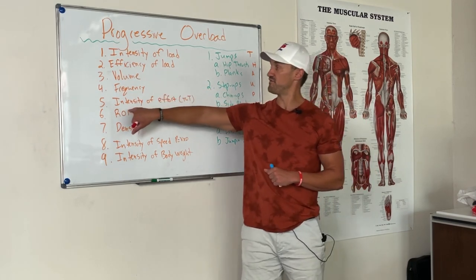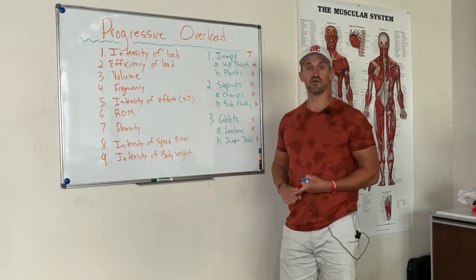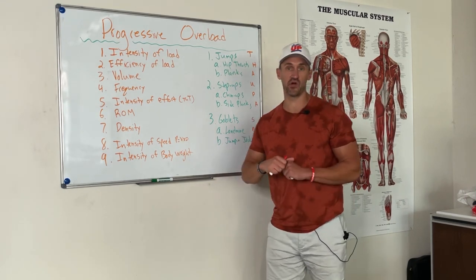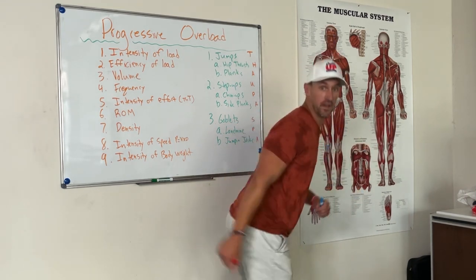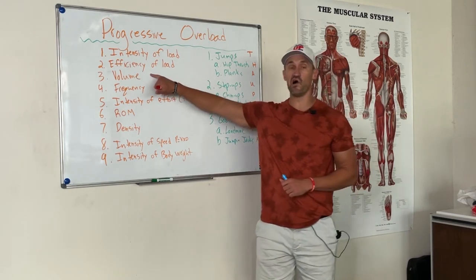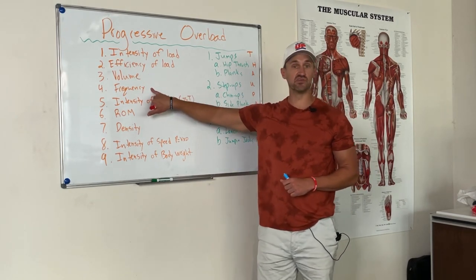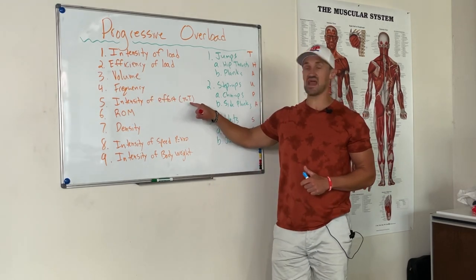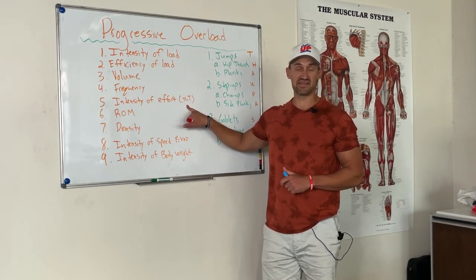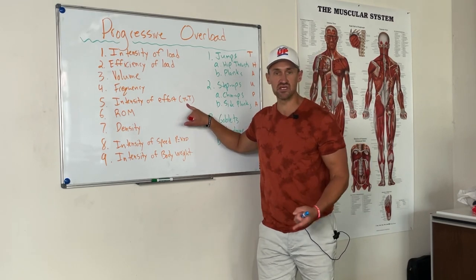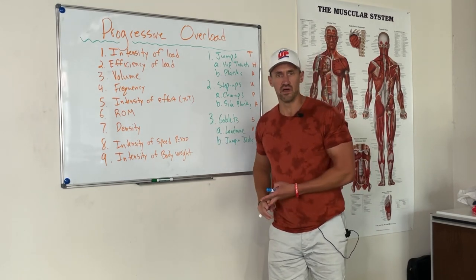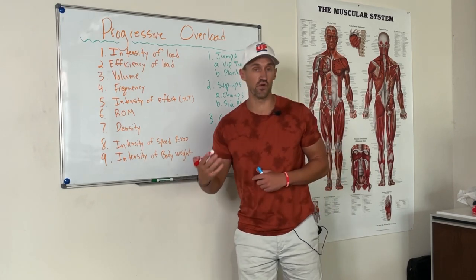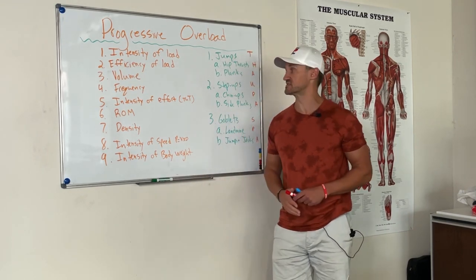Three, four, and five: VFI — volume, frequency, and intensity. These are the kings and queens for hypertrophy. If you want a big old caboose, you've got to increase the volume. How many times are you training — from two days to three? The intensity of the effort is going to be time under tension. It could be unilateral, slowing down the concentric or eccentric force reps, supersets, or drop sets.